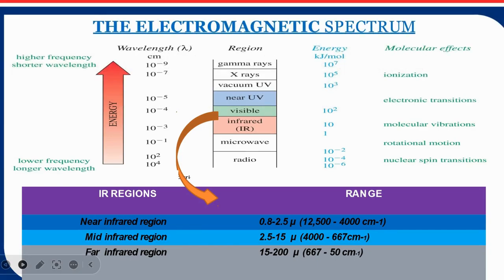Before we go ahead about the molecular vibration and infrared spectroscopy, I am talking about the electromagnetic spectrum. This is the electromagnetic spectrum and all the radiations are kept according to their wavelength. As we are studying about the IR region, we divide the IR region into three parts: near IR region, mid IR, and far IR.